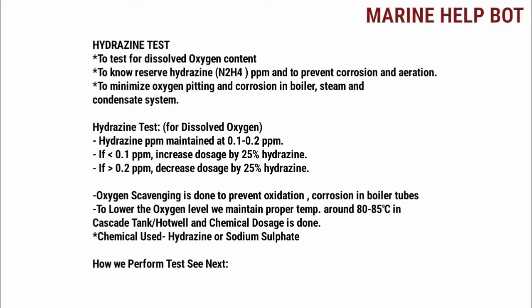Here I mentioned why we do this test and what levels we are maintaining. The chemicals used for the dosage and to lower the oxygen level, we maintain proper temperature around 8 to 25 degrees in the cascade tank and we also use some chemicals for the treatment of the water.